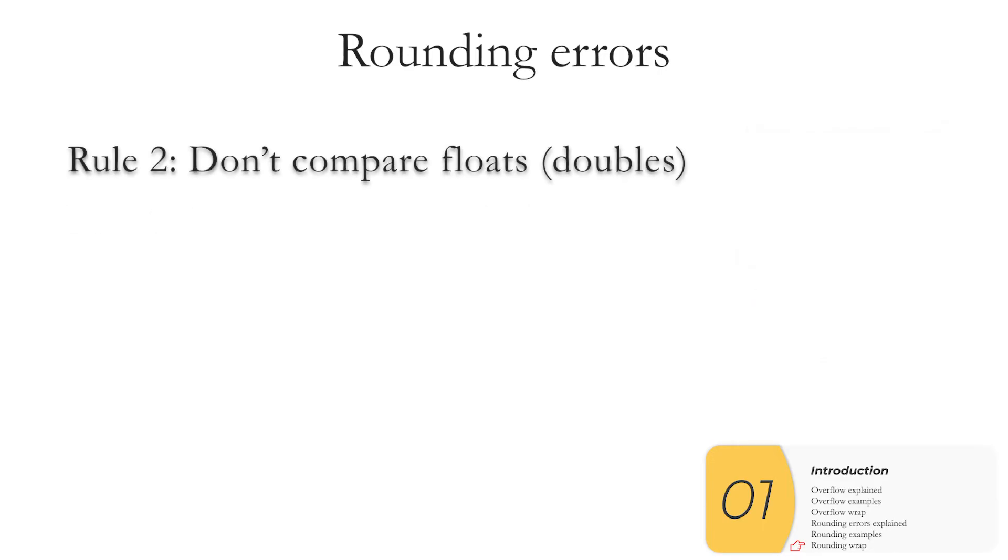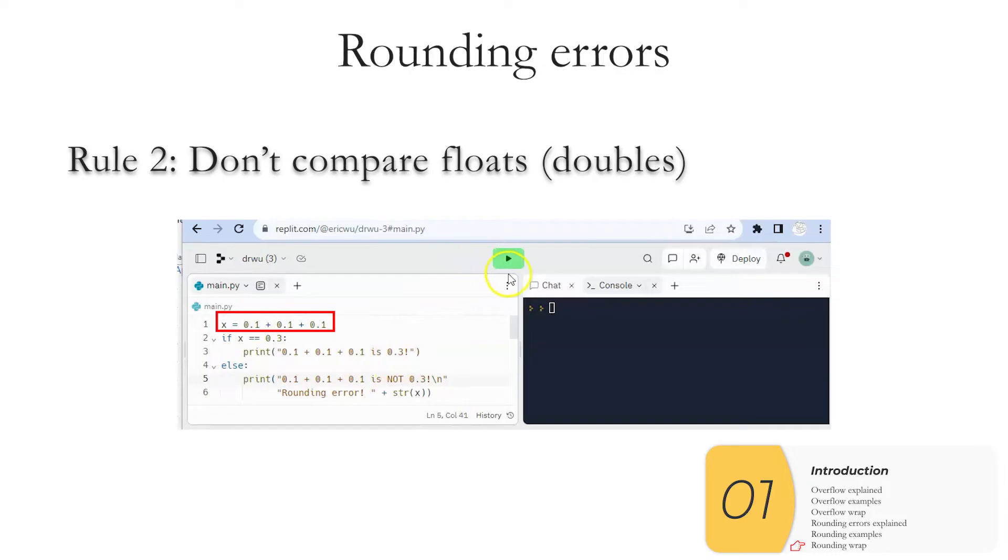Rule two is that we can't compare floats or doubles or whatever it is that your language uses. So for example, if I have a program that adds 0.1, 0.1, 0.1, and I want to check if it's 0.3, I can't just check to see if my number is equal to 0.3. Why? Because of rounding errors. In this case, when I add them all up, it's 0.3 and just a little bit more. So instead, what I need to do is check to see if the two numbers that I'm looking for are really, really close to each other, as I've done here, where I'm using an absolute and I'm subtracting one from the other. And again, you want to do this as a last step. Don't use anything like round or ceiling or floor before your final checks.